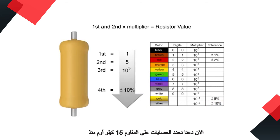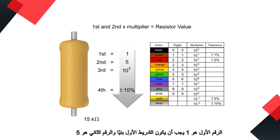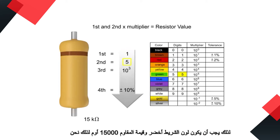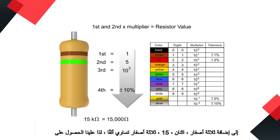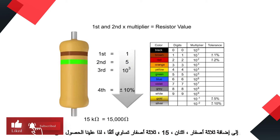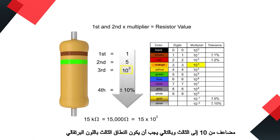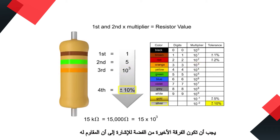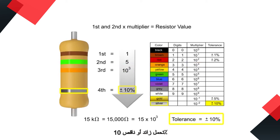Now let's determine what the bands would be on a 15 kilo ohm resistor. Since the first digit is one, the first band would need to be brown. The second digit is five, so the band color would need to be green. The resistor value is 15,000 ohms, so we need to add three zeros to 15. Three zeros is a thousand, so we need a multiplier of ten to the third — thus the third band would need to be orange. The last band would need to be silver to indicate a tolerance of plus or minus ten percent.